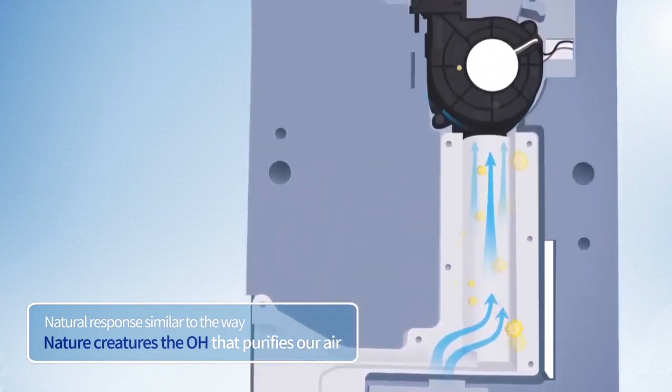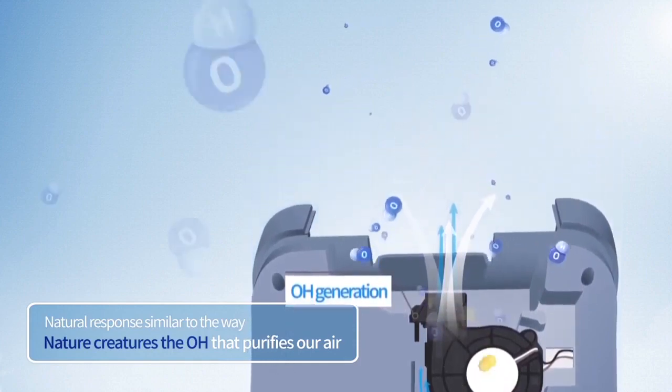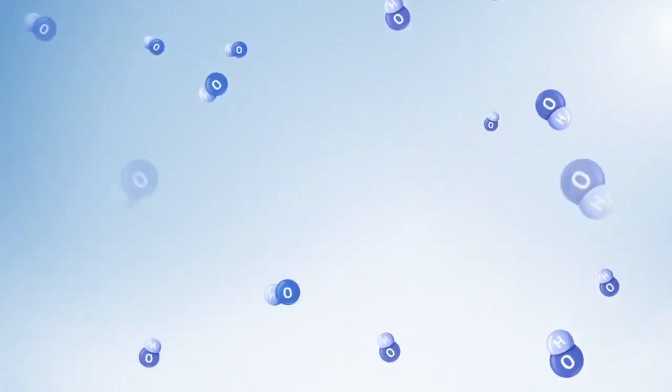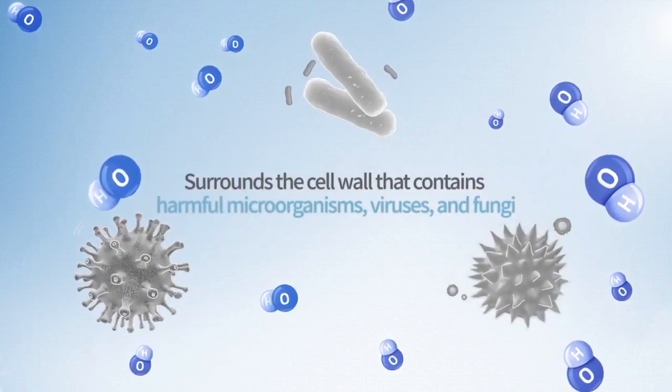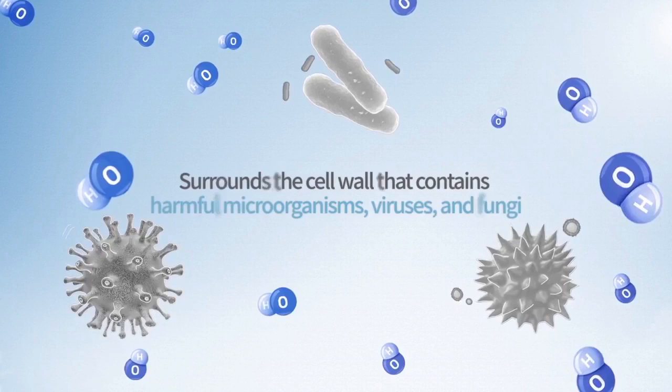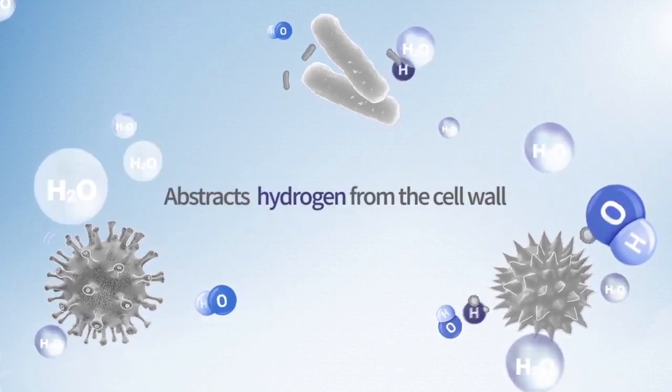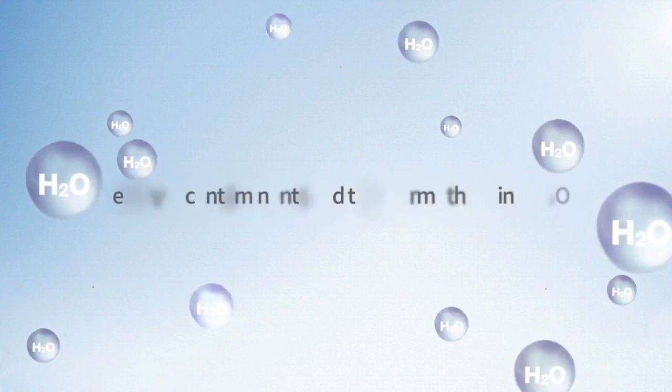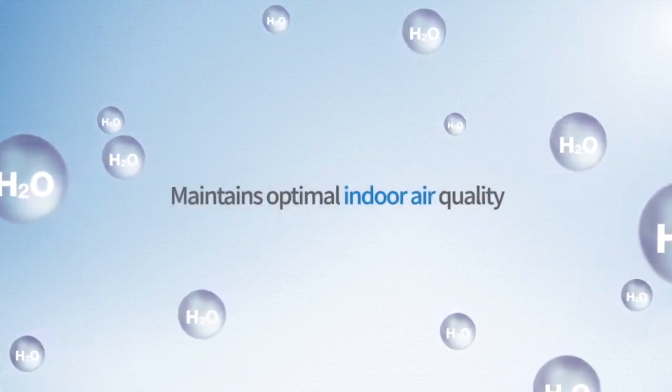A wave from the Wellis air disinfection purifier destroys the cell wall by removing the hydrogen from the wall which surrounds harmful germs, viruses, and fungi. After the harmful organism is removed, it is converted into harmless H2O. This process helps to maintain pleasant indoor air.